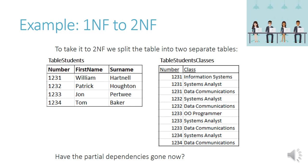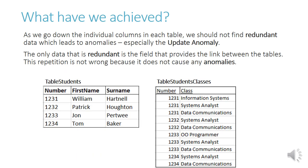To take this table to second normal form, we split it into two separate tables. The fields only dependent on number go into a separate table: table Students with number, first name, and surname. The other table will only have the composite key: number and class. All partial dependencies have now gone. Going down the individual columns in each table, we should no longer find redundant data that leads to anomalies — especially the update anomaly. The only repetition is the field providing the link between the tables, which does not cause anomalies.